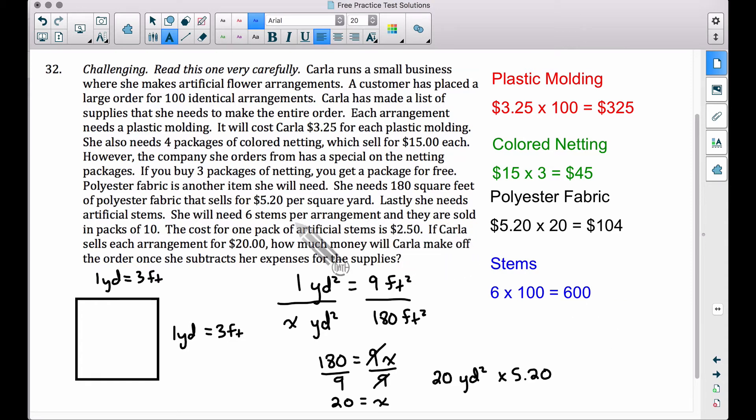The stems are sold in packs of 10. So if she buys one pack that costs $2.50, she's going to get 10 of those stems. Well, she needs 600. So one way to think about it here is that if she needs 600 stems, if we divide that into packs of 10, 10 per pack, she's going to need 60 packs in all. And since each pack costs $2.50, she needs 60 packs. 60 times $2.50 is $150.